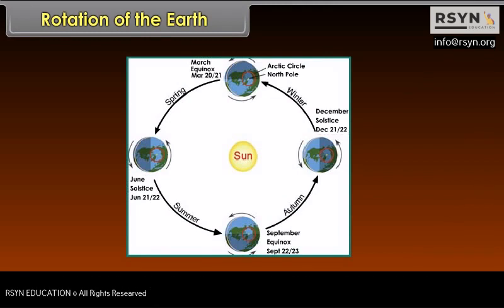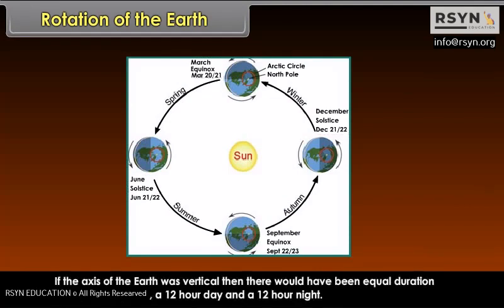The seasonal changes occur due to the inclination of the earth's axis. If the axis of the earth was vertical, then there would have been equal duration of day and night — that is, a 12-hour day and a 12-hour night.